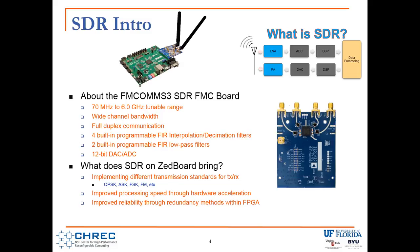The SDR device we're using is the FM Comms 3 FMC board. It has a 70 MHz to 6 GHz tunable range, wide channel bandwidth, full duplex communications, four built-in FIR interpolation and decimation filters, as well as programmable low-pass filters.